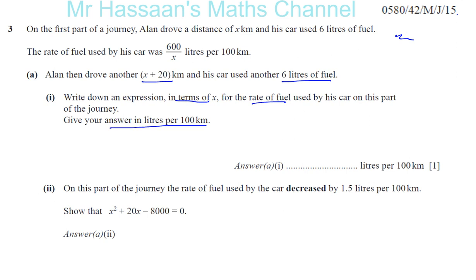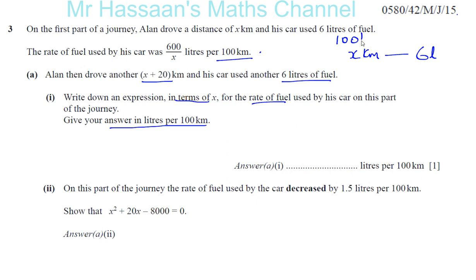What I'm going to do first is see how they got to this expression for the first part. They told us 600 over X liters per 100 kilometers. He's driven X kilometers and used 6 liters of fuel. They want to know how much fuel he uses per 100 kilometers — that's what this means: the number of liters used for every 100 kilometers.